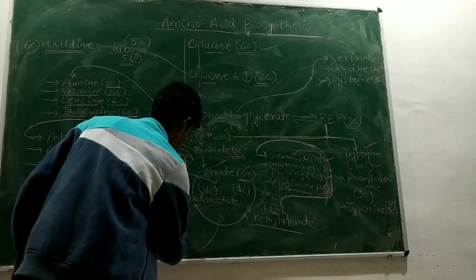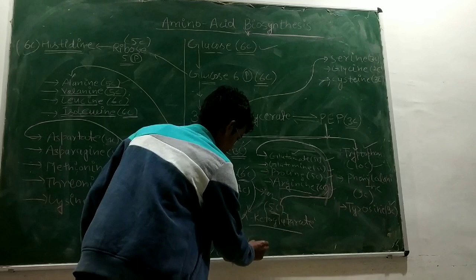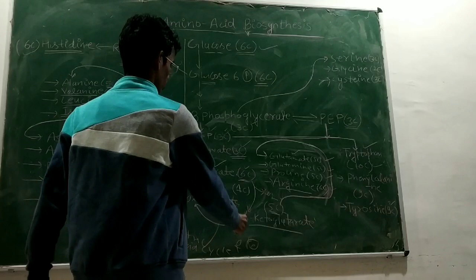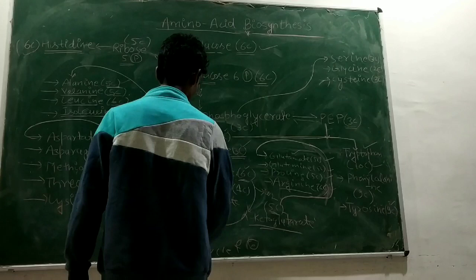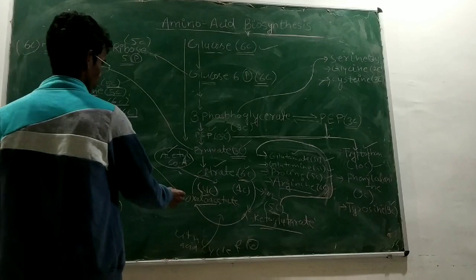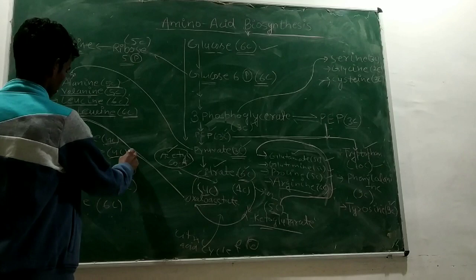This is the citric acid cycle. Next is oxaloacetate, which is a 4-carbon containing compound.